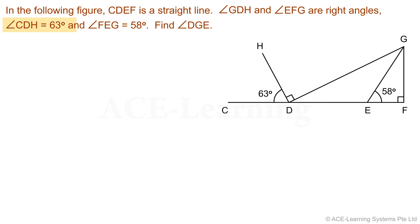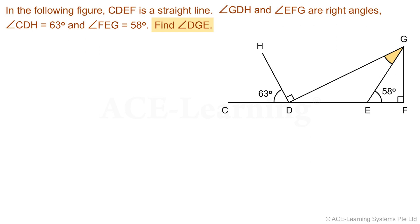We note that the measurements of four angles are given, of which two of them are right angles. The angle whose measurement we are required to find is angle DGE. Let's mark out this angle in the given diagram.